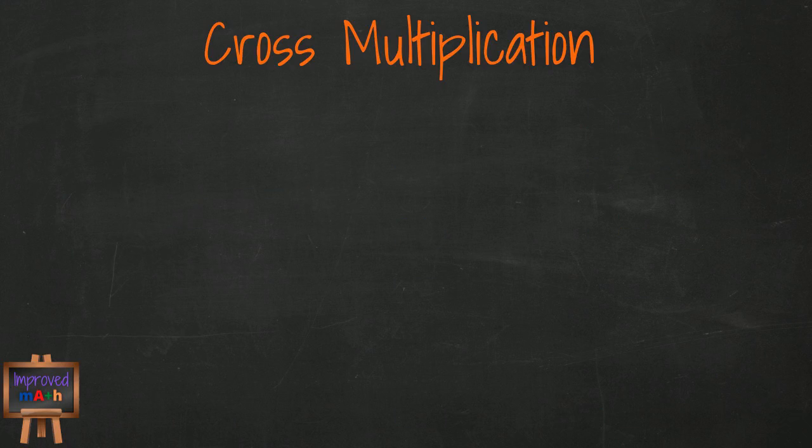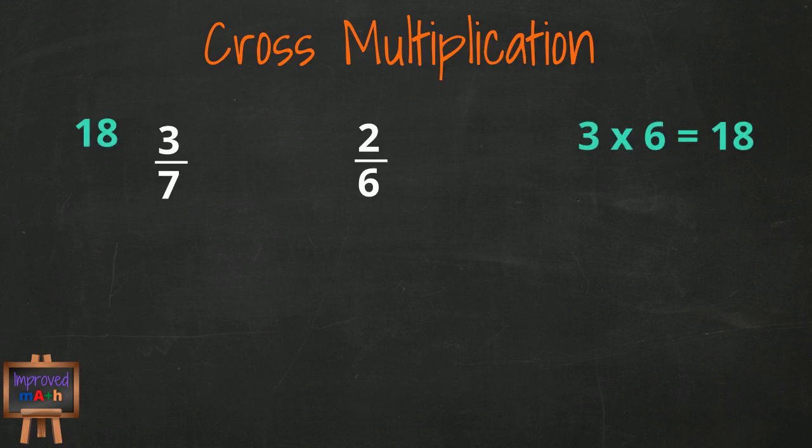Let's do another example. 3 sevenths compared to 2 sixths. Which one is greater? We take the numerator in our first fraction of 3 and multiply it by the denominator of our second fraction, 6, and we get 18. We write that down here with our first fraction.